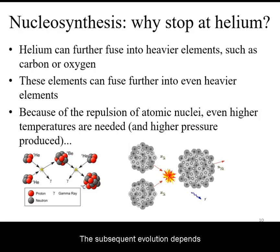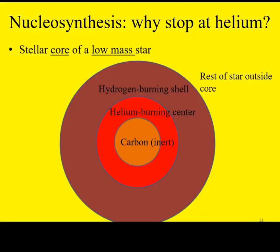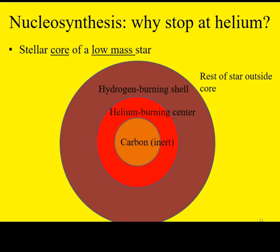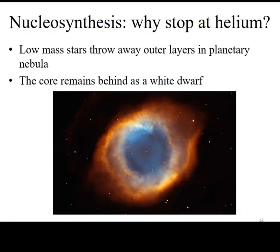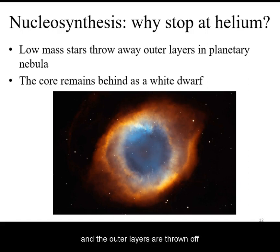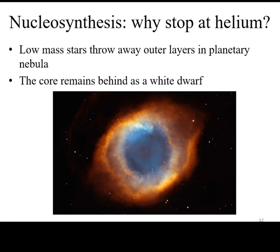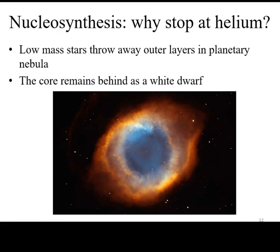The subsequent evolution depends on the mass of the star. For low-mass stars, like our Sun, helium ignites and starts to combine into carbon. Once the carbon also runs out, the core collapses into a white dwarf, and the outer layers are thrown off as what is referred to as a planetary nebula, which is not actually related to planets — it is merely a namesake.